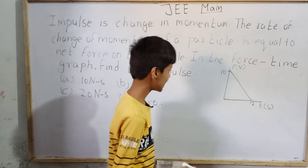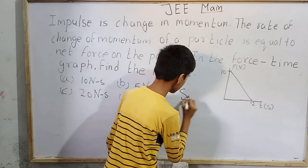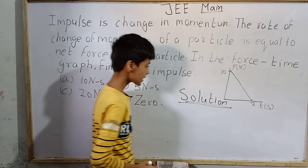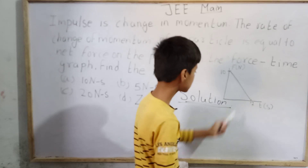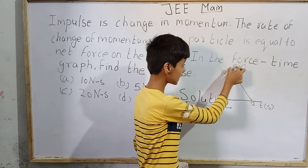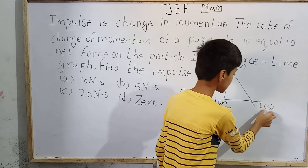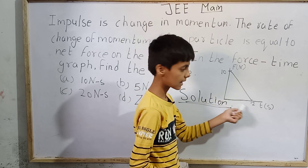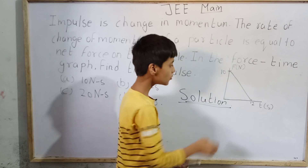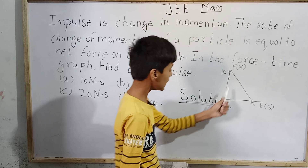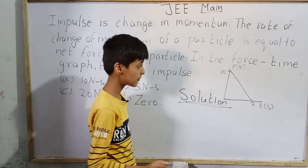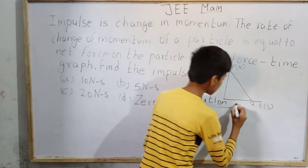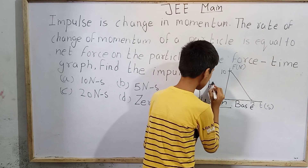This is a very simple question. Now, from our solution — we have to take care of this graph. Here, 10 units is force in newtons, and 2 units is time in seconds. We can see that a triangle is being formed here. We have to find the area of this triangle, and once we find it, we can easily find the impulse. The base and height of this triangle are identified from the graph.